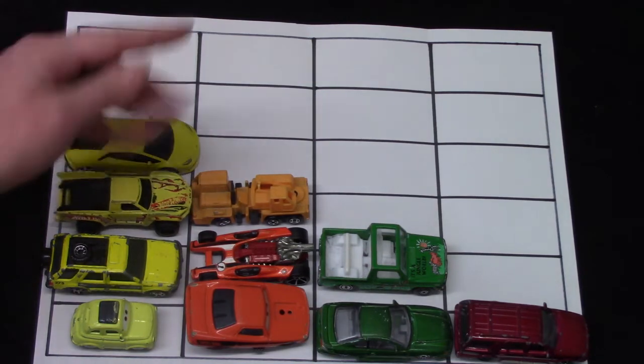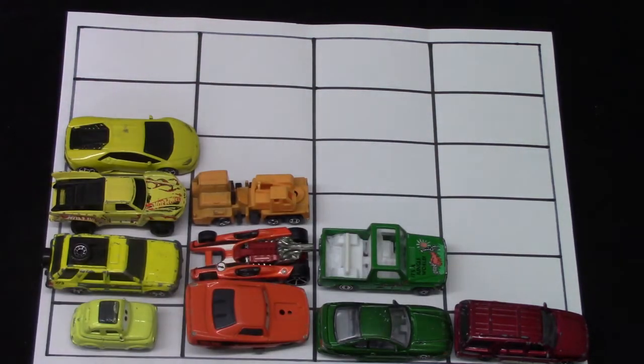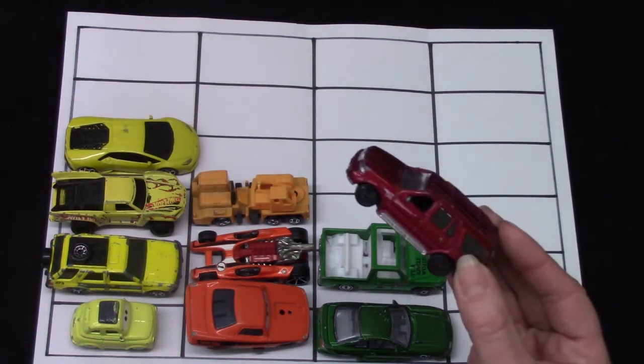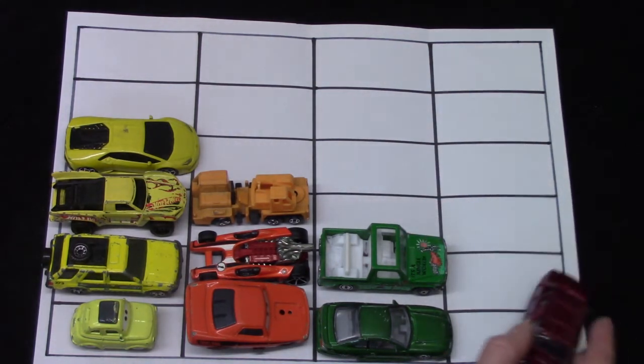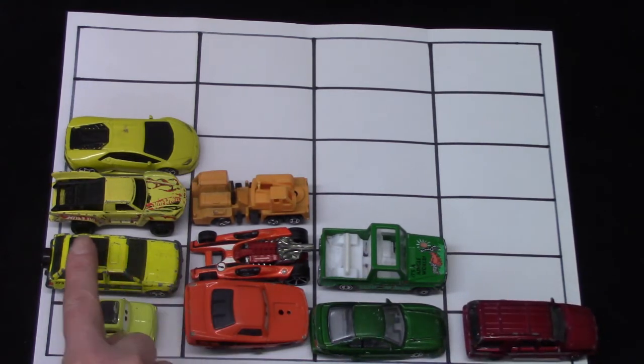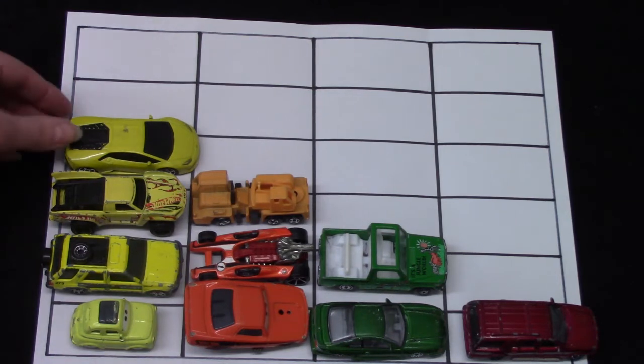Which one—yellow, orange, green, or red—has the smallest number of vehicles? You're right, it's our red one. It is our smallest number and we call that the fewest. There are fewer red vehicles than yellow vehicles.